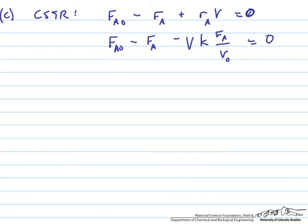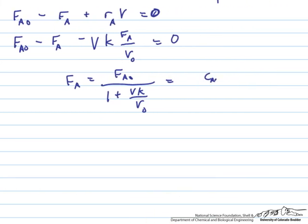I'm going to rearrange this expression. The algebra gives us FA equals FA0 over 1 plus VK over the volumetric flow rate. We'll furthermore express FA0 in terms of CA0.